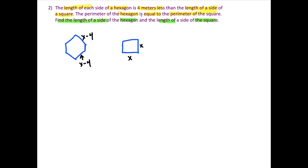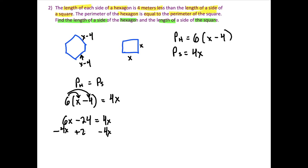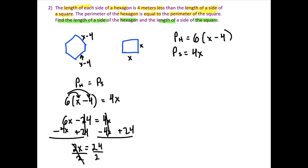Since the perimeters are equal, we set up the equation: 6(x − 4) = 4x. Remember, 'is' means equals. The perimeter of the hexagon is 6 times (x minus 4), and the perimeter of the square is 4x. Distributing: 6x minus 24 equals 4x. Subtracting 4x from both sides, then adding 24 to both sides, we get 2x equals 24. Dividing by 2 gives x equals 12 meters.